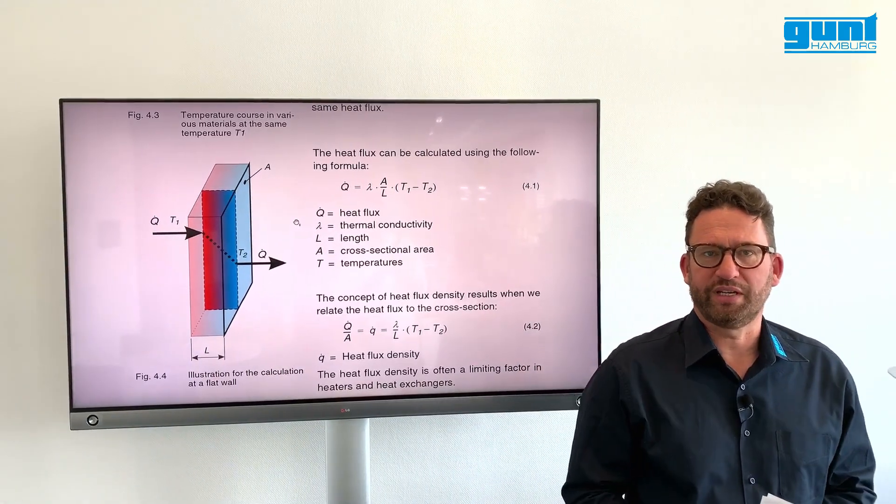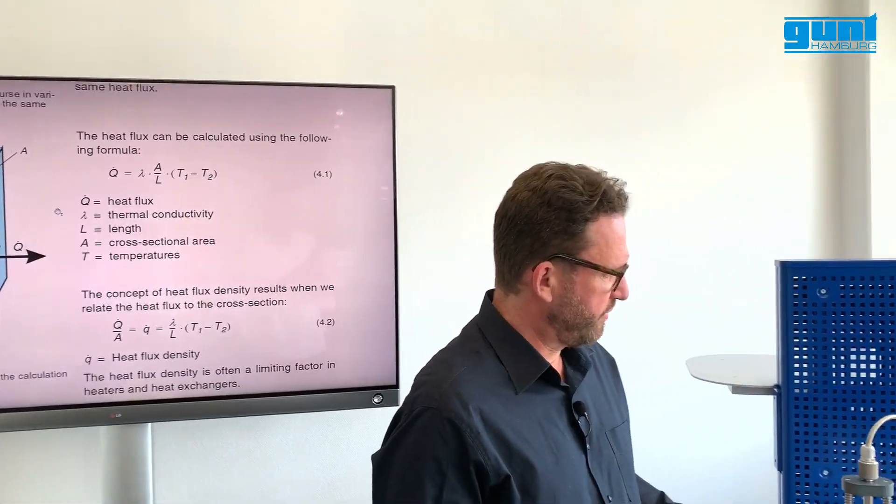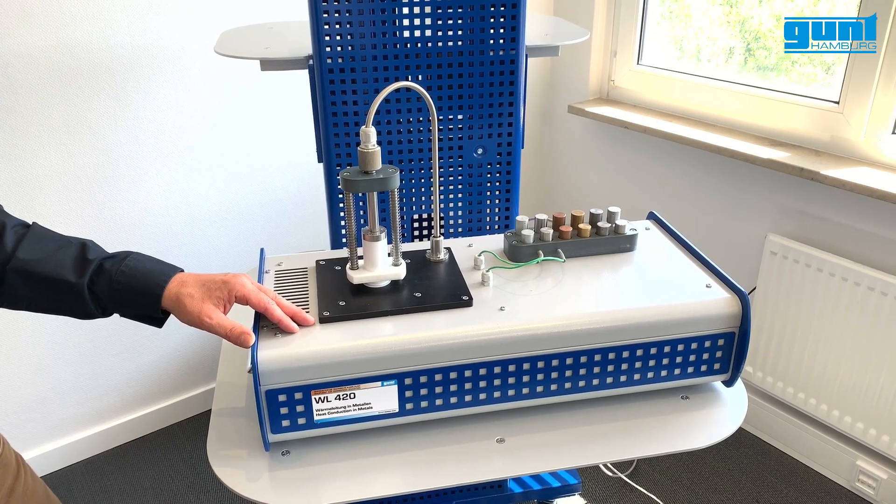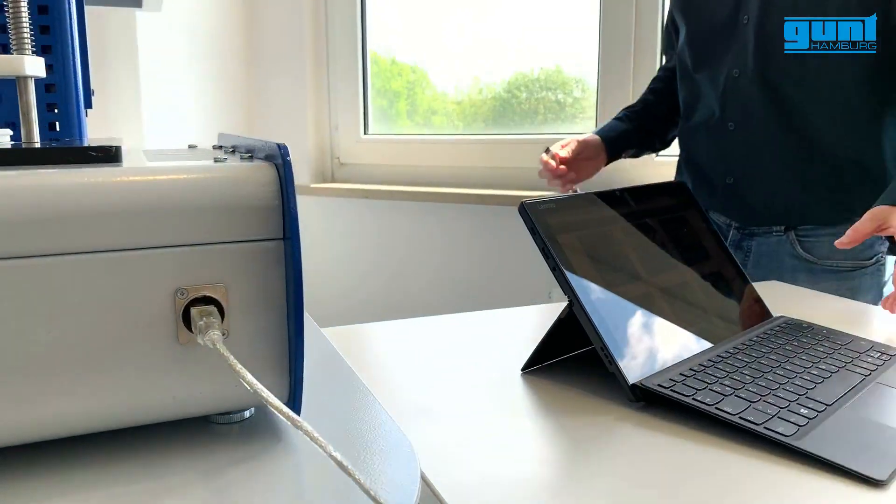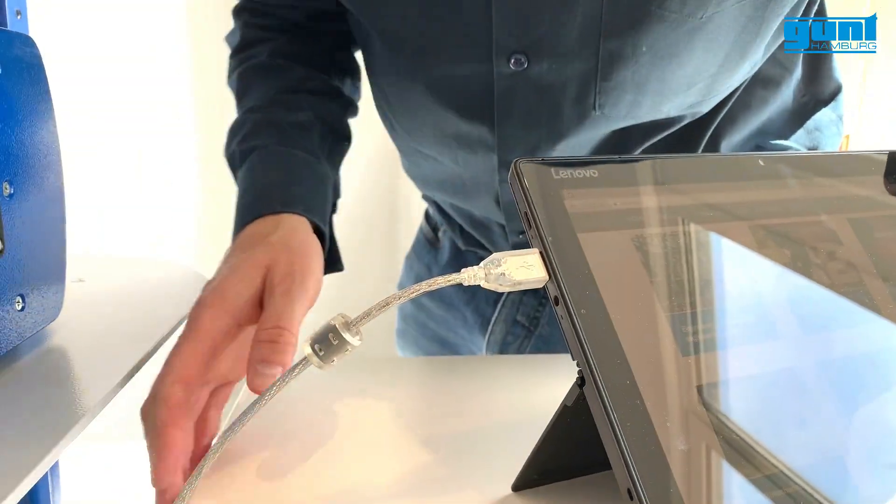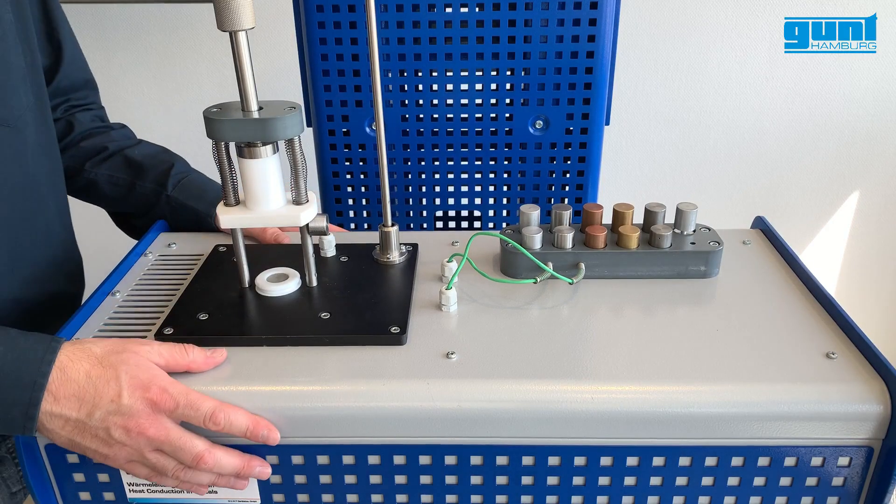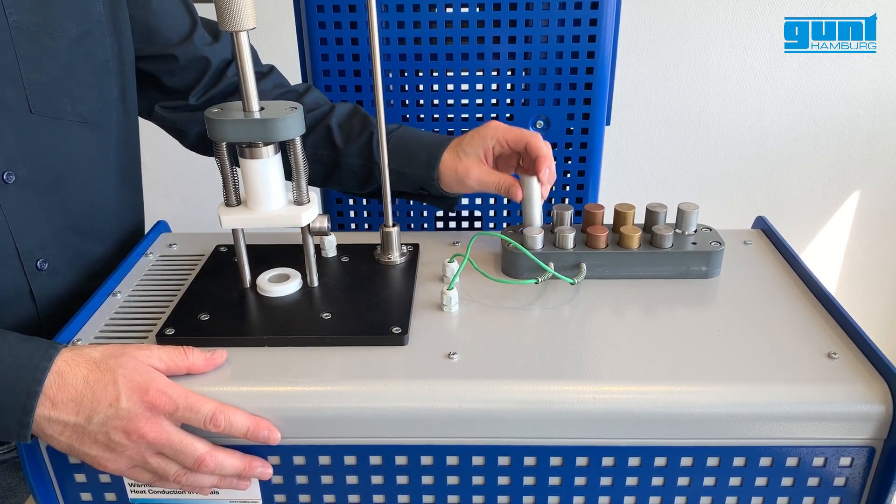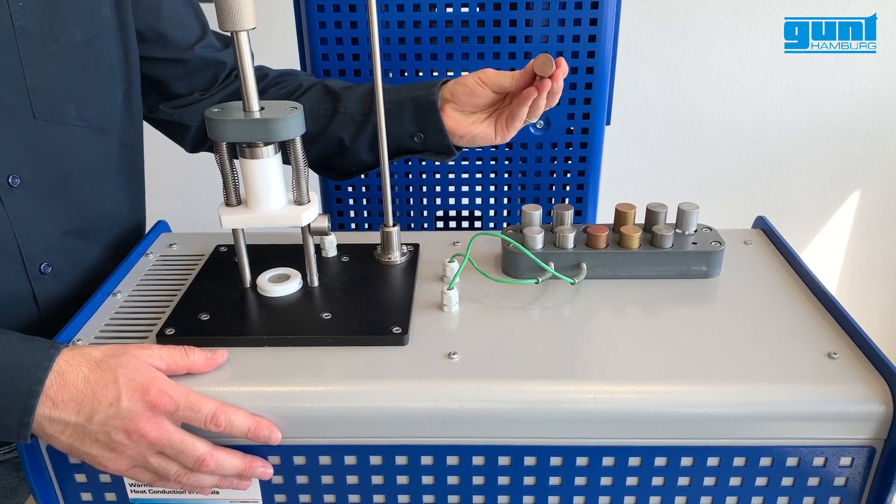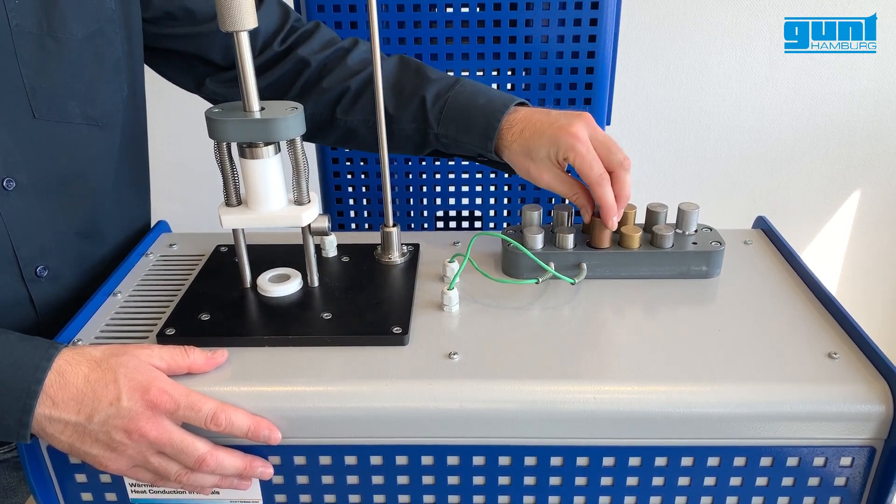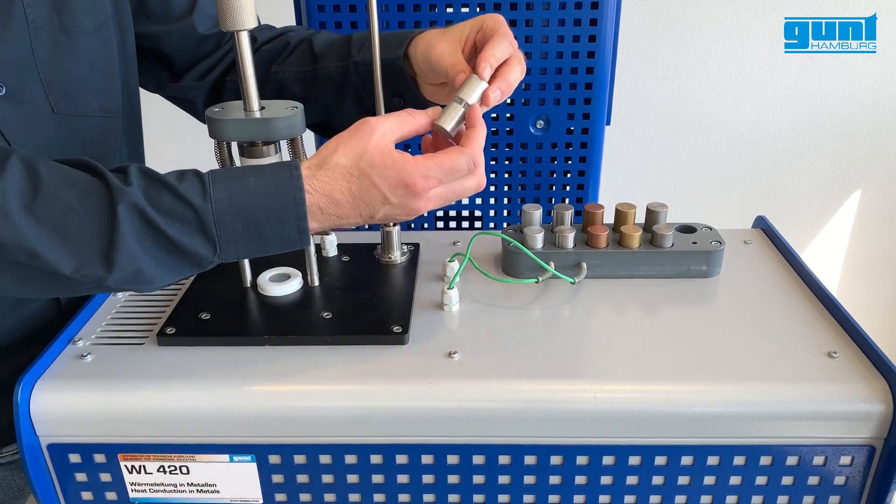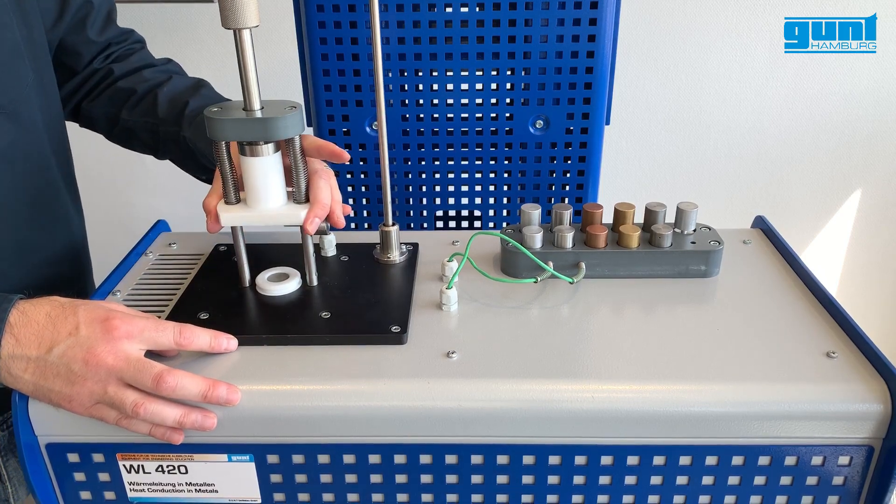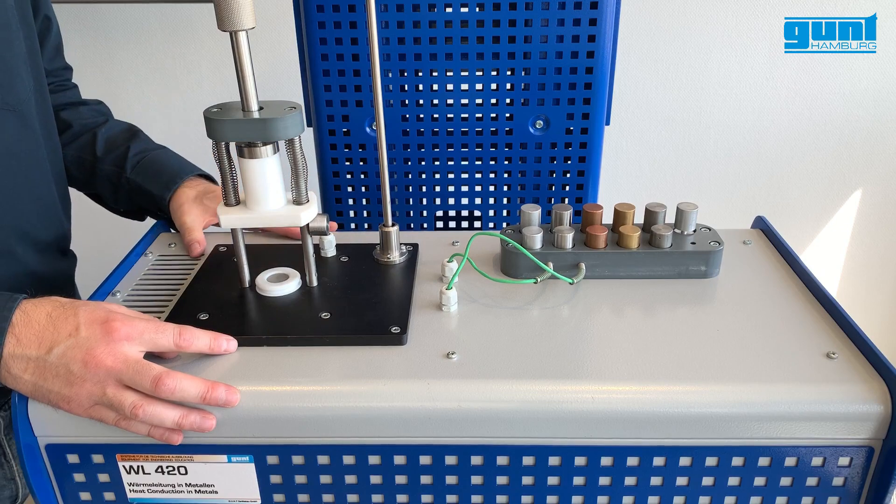The WL420 is designed as a benchtop unit. Here we have the base which contains all the electronics necessary for the sensors and the connectivity to the PC with the Gunt data acquisition software. It is important to point out that the PC is necessary. The actual experiment is located on top of the base and happening here on the left. The WL420 comes with specimens for five different materials and two different lengths respectively, as well as one specimen with constricted cross-section. The specimen is placed in this spring-loaded device which ensures reliable contact of all heat transferring surfaces.